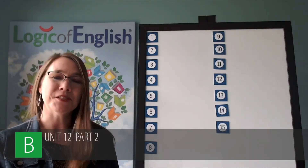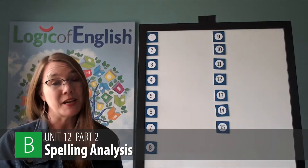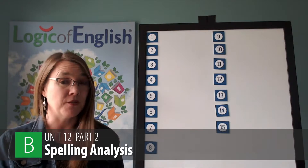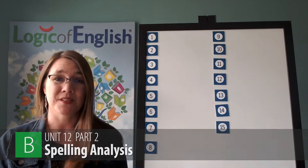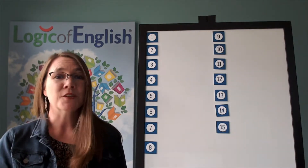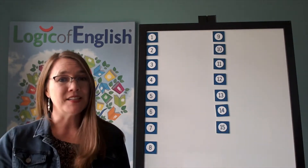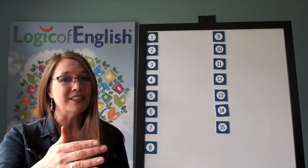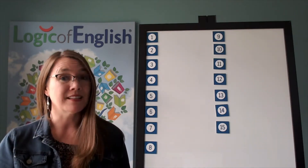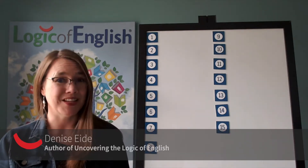It's time for a spelling analysis — time to continue applying the phonograms and rules we've been learning. The first word is slither. I saw a snake slither across the grass. Slither. Go ahead and say slither.